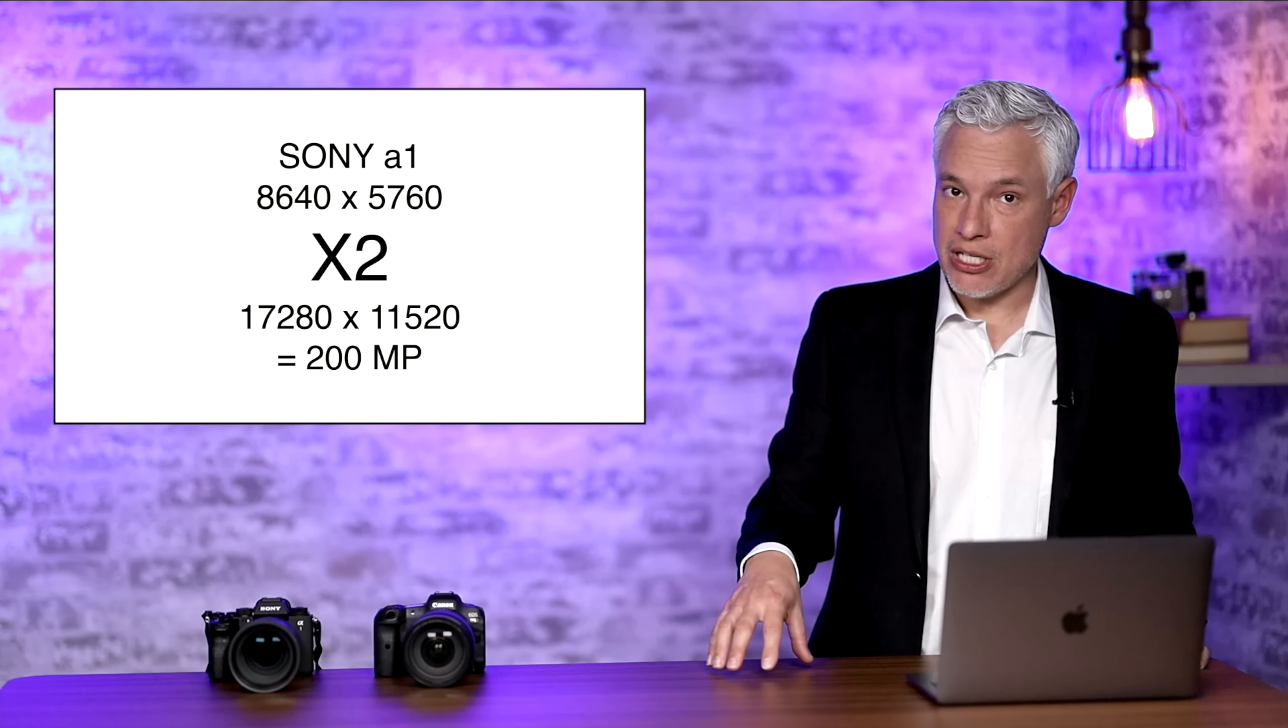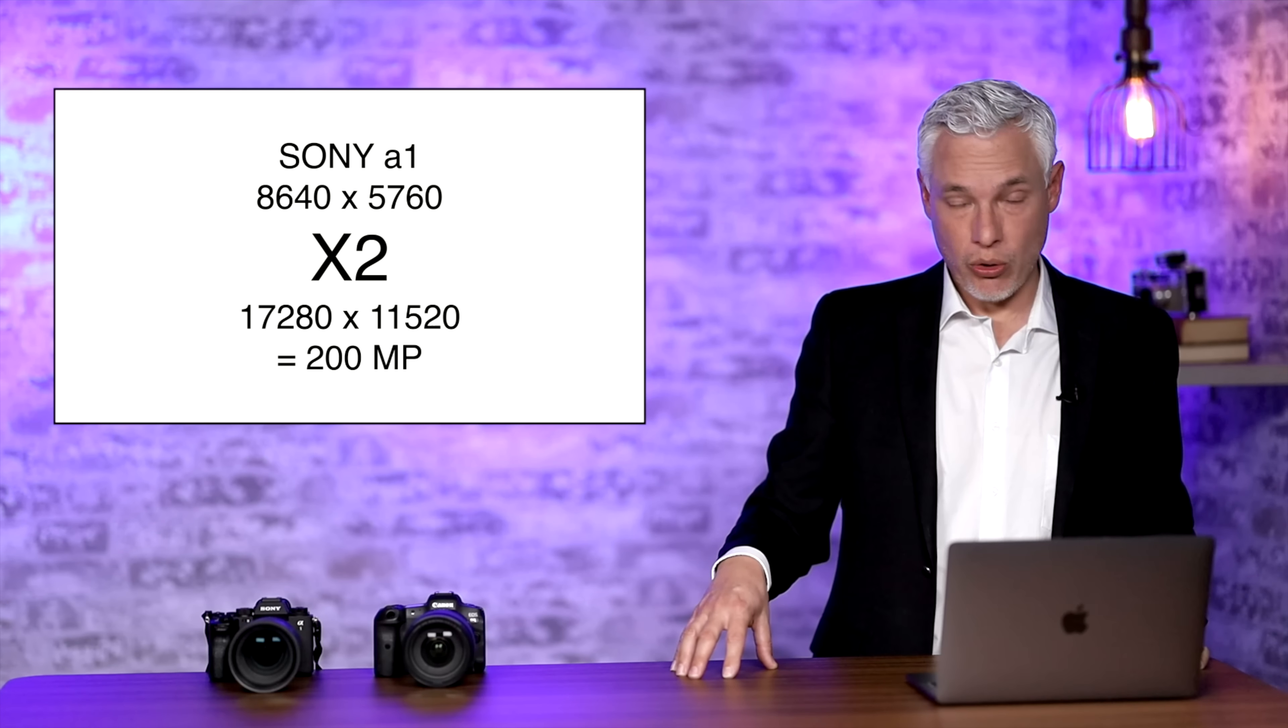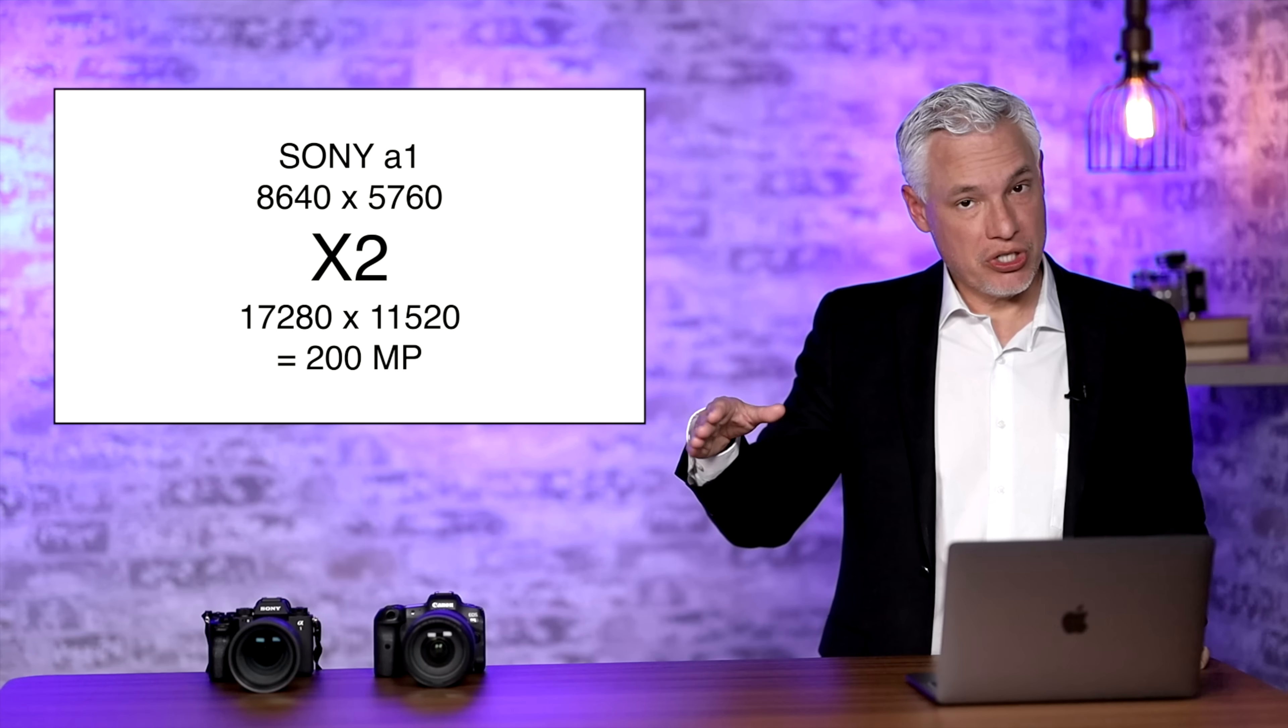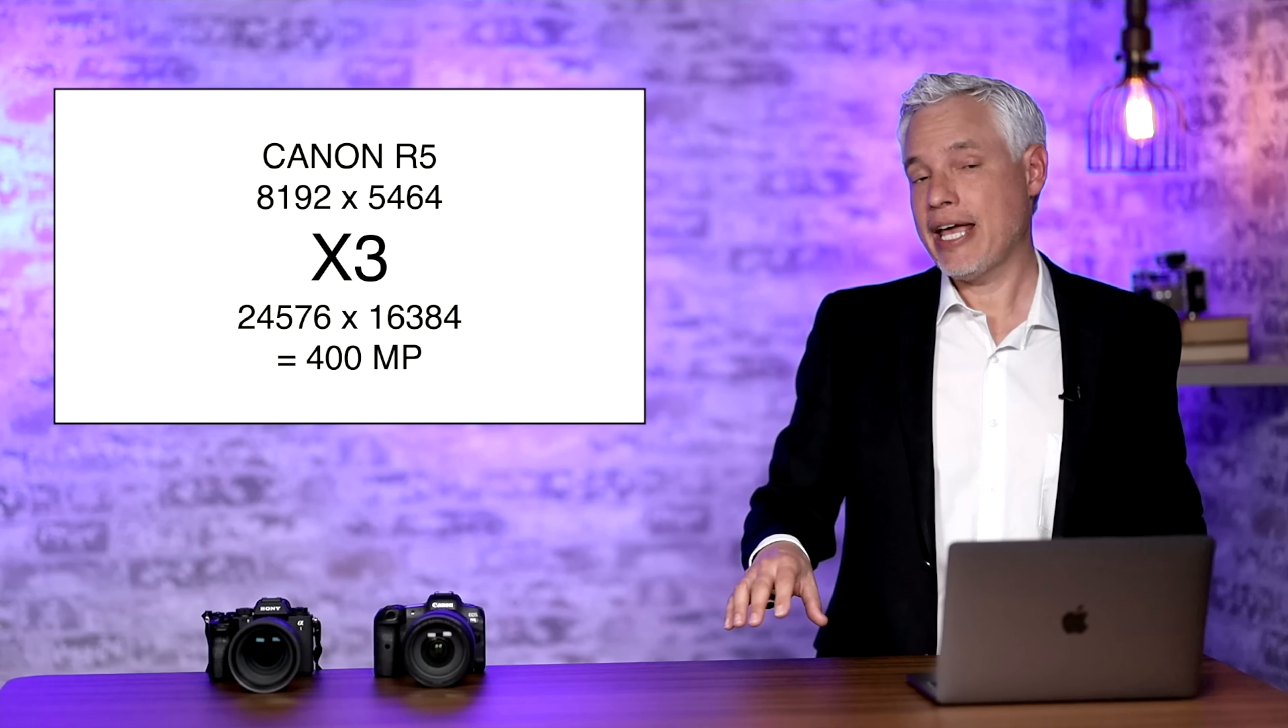All the Sony cameras work fundamentally the same. They produce an image up to four times the sensor's native resolution or twice the horizontal resolution and twice the vertical resolution. The Canon works a little different.